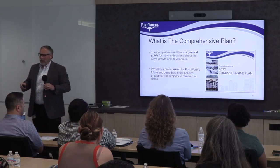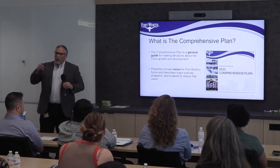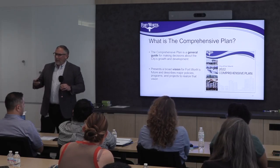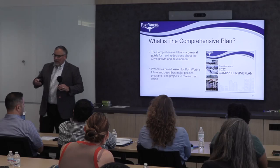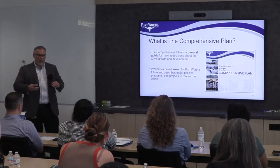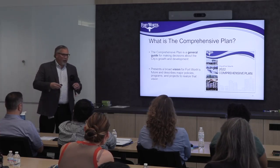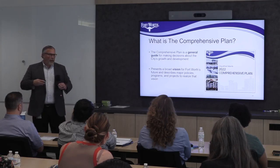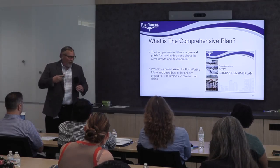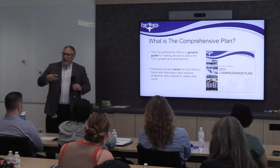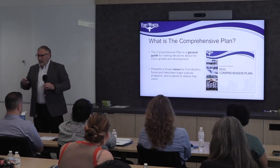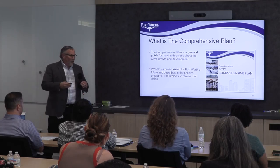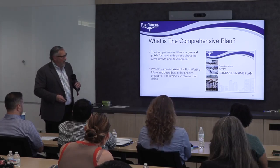We also have a thing called the comprehensive plan, and this is really important. Whenever you're looking at a site to develop, you need to know what the comprehensive plan calls for that site, because the comprehensive plan is the guide for growth for the city of Fort Worth — it reflects what the city thinks that use should be in 20 to 25 years. Whenever there's a zoning change, staff looks at the comprehensive plan, so if it doesn't match what Bob wants to do, it could be detrimental to your case.